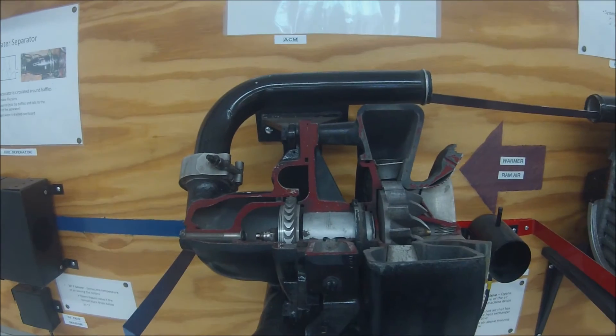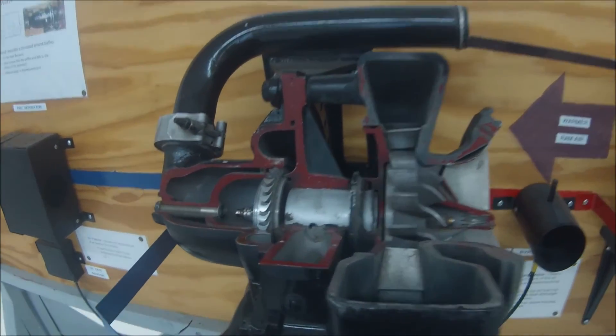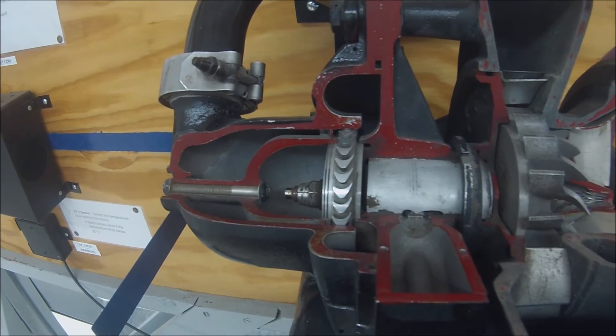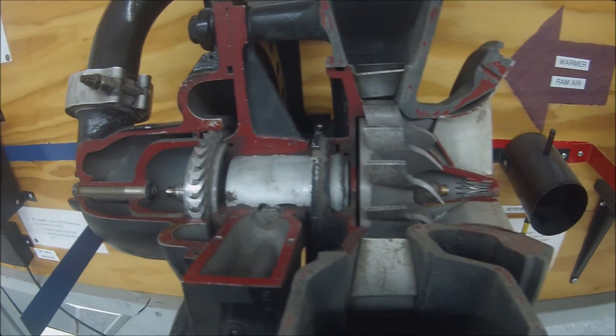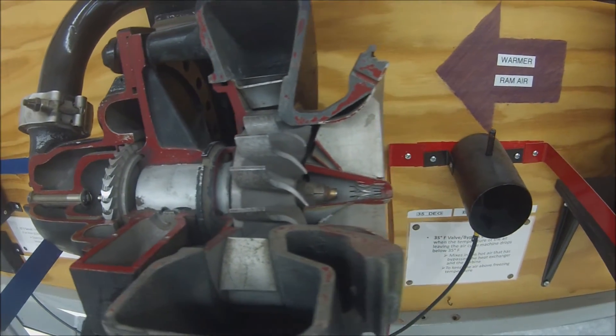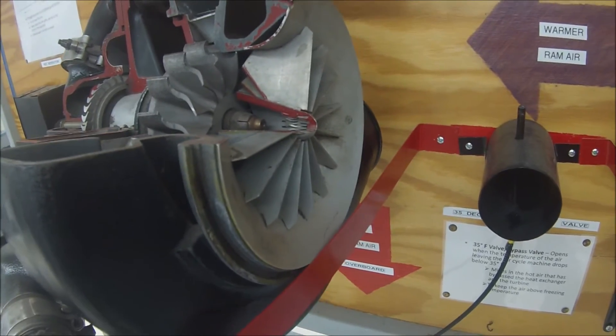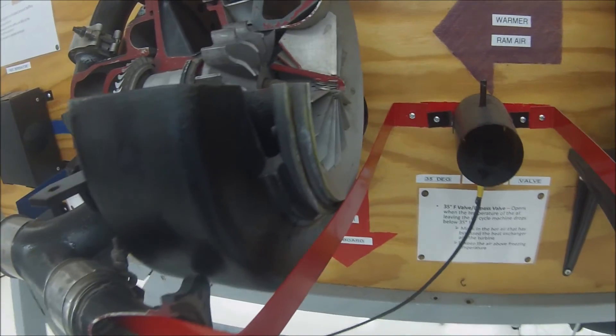Next is the air cycle machine. The compressor creates the load for the turbine. The turbine then turns the compressor and takes energy out of the air for work. Air is cooled because part of the energy drawn is heat energy, which decreases the temperature.